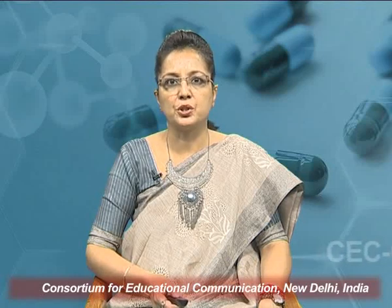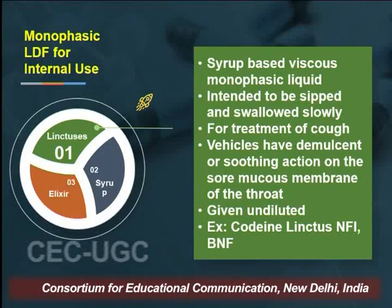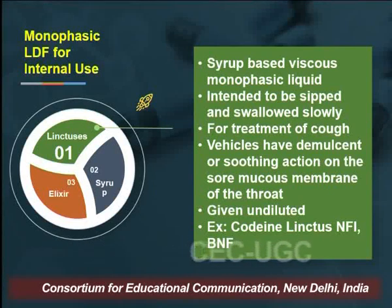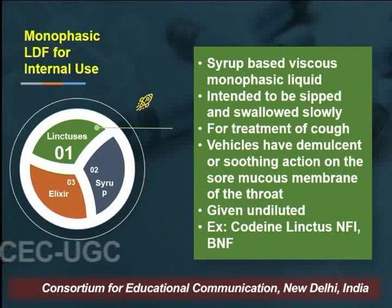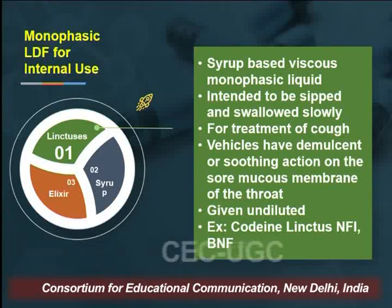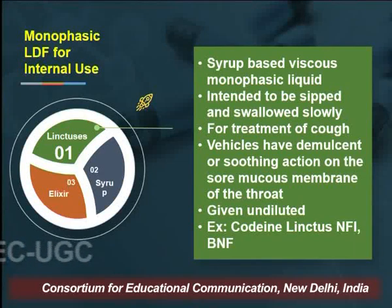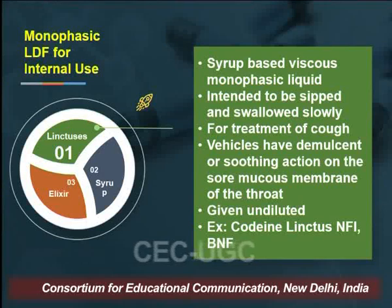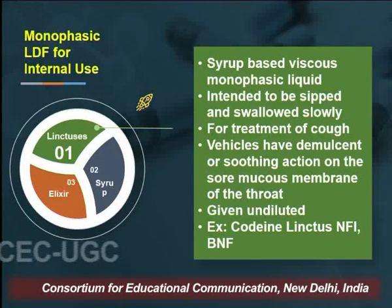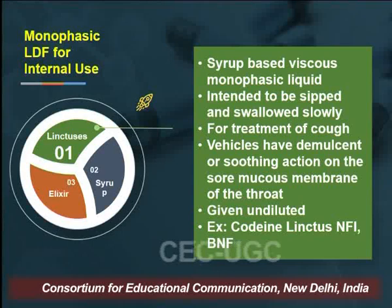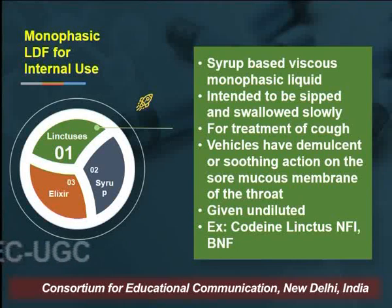The next classification under monophasic liquid dosage forms are linctuses. Linctuses are viscous preparations intended to be sipped and swallowed slowly. They are generally meant for treatment of cough, and the vehicles employed are generally demulcent and have a soothing action on sore mucous membrane of the throat. Linctuses are given in undiluted form. Example: codeine linctus, official in the National Formulary of India as well as the British National Formulary.